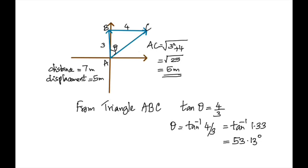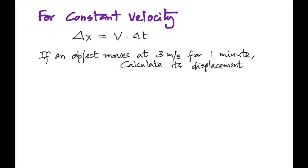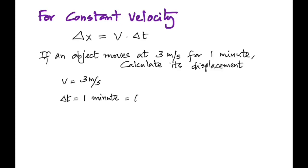For constant velocity there is only one equation: displacement equals velocity multiplied by time. Find the answer to this: if an object moves at 3 meters per second for one minute, calculate its displacement. The unit is meter per second, which means time has to be in seconds, so one minute is 60 seconds. Multiply that and you get 180 meters.